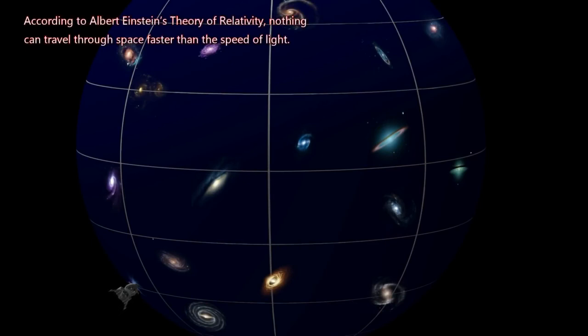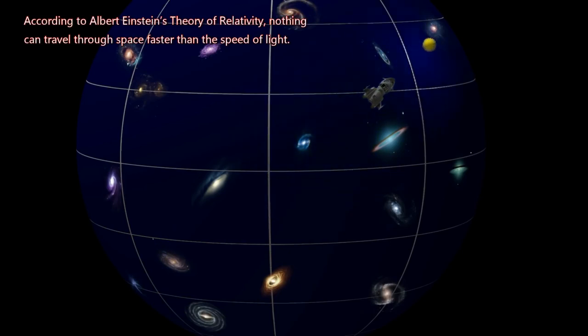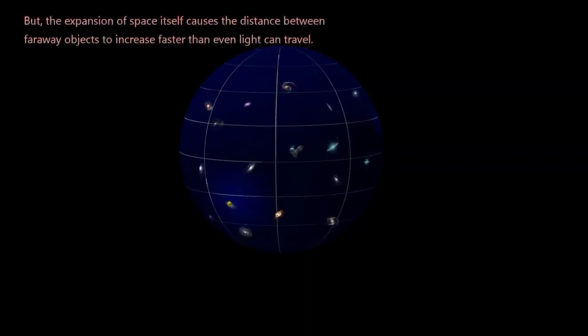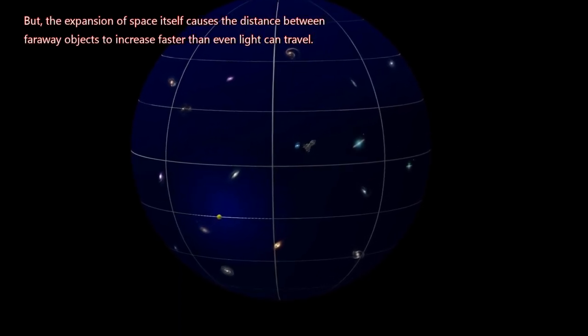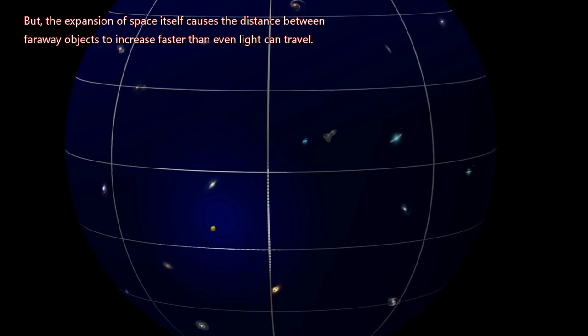According to Albert Einstein's theory of relativity, nothing can travel through space faster than the speed of light. But the expansion of space itself causes the distance between far away objects to increase faster than even light can travel.